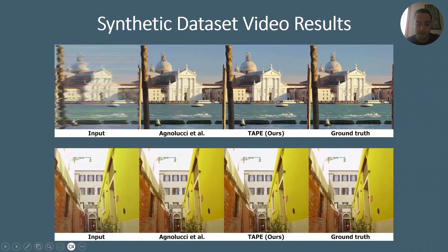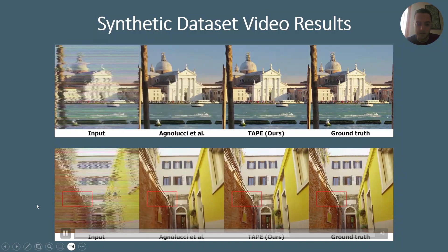Let's now take a look at the second video. Also in this case, we have a lot of clean frames that can be used as references for the restoration. Please notice how severe the degradation in the input videos is, and this shows how difficult the analog video restoration task is. We can see that the bricks of the wall in the foreground are more easily distinguishable in our video compared to the baseline.